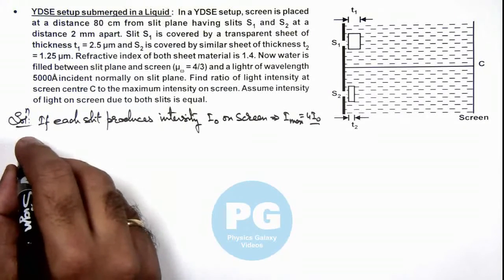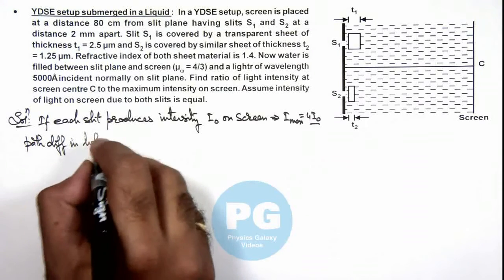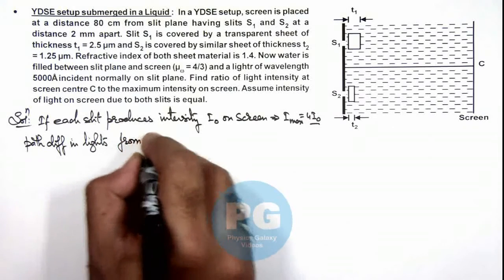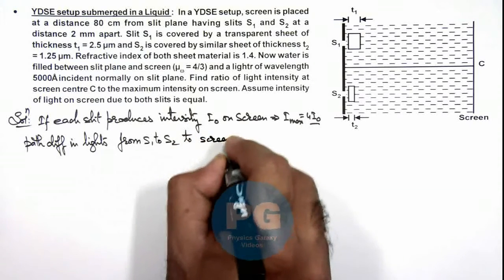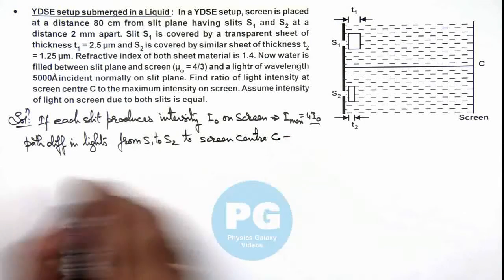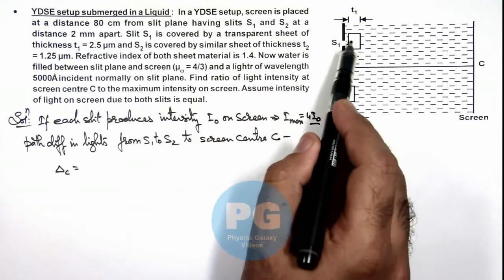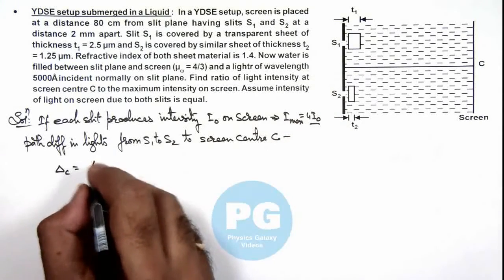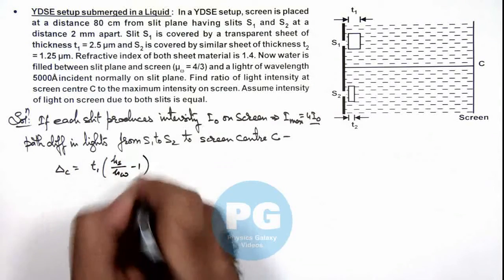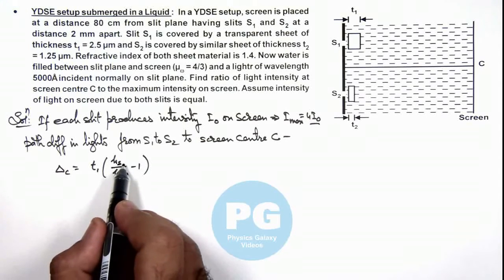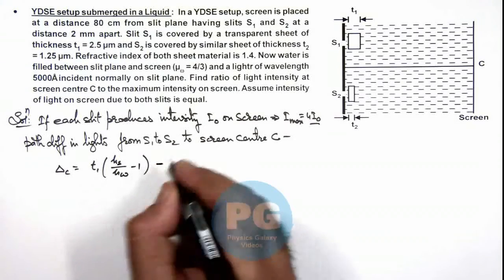In lights from S₁ to S₂ to screen center C, for this Δ at C we can write as: due to the first sheet of thickness t₁, path difference introduced will be t₁ multiplied by (μ_sheet/μ_water - 1). Here I am taking the refractive index of sheet with respect to that of water. The relation is the same what we have studied in concept videos.